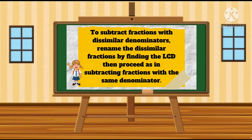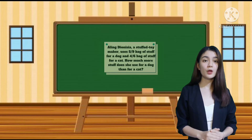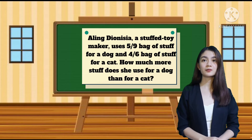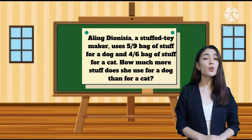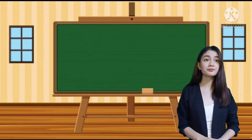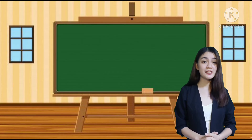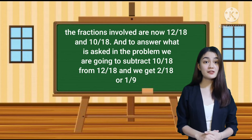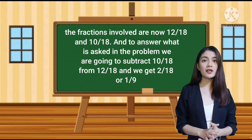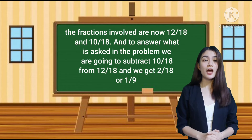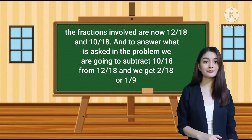To subtract fractions with dissimilar denominators, rename the dissimilar fractions by finding the LCD, then proceed as in subtracting fractions with the same denominator. What is asked? What are given? We need to find the LCD of 6 and 9 to rename these fractions. The fractions involved are 12 over 18 and 10 over 18. We subtract 10 over 18 from 12 over 18 and get 2 over 18, or 1 ninth.